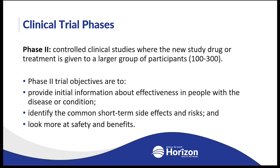Phase 2 clinical trials are controlled clinical studies where the new study drug or treatment is given to a larger group of typically 100 to 300 participants. Drawing on ADME data from Phase 1, Phase 2 primarily asks: does it work in a specific disease state, and at what dose? Different dosing regimens are tested along with pharmacokinetic testing to determine potential side effects. The primary focus is efficacy and preliminary safety information.